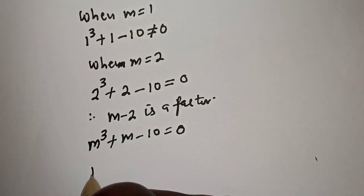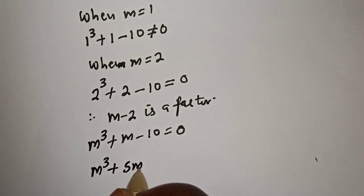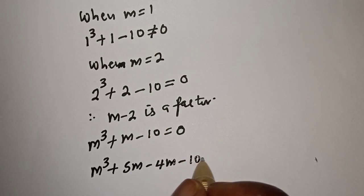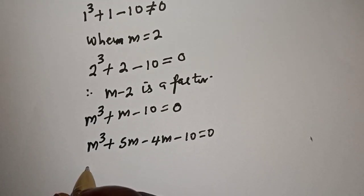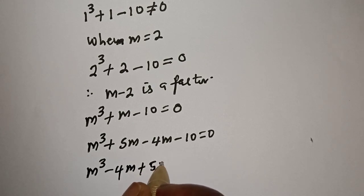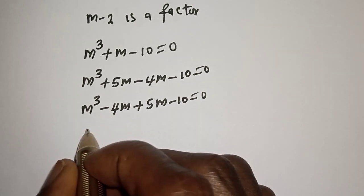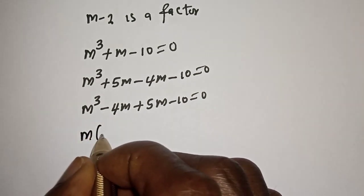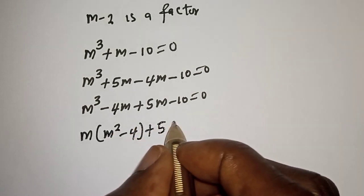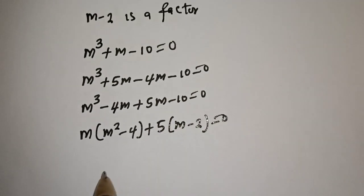So this can be expressed as m raised to the power 3 plus 5m minus 4m minus 10 is equal to 0. Let's rearrange this: m raised to the power 3 minus 4m plus 5m minus 10 is equal to 0. From here, m is common — let's bring it out: m bracket m squared minus 4, plus 5 bracket m minus 2, is equal to 0.